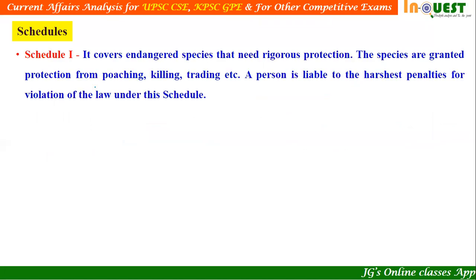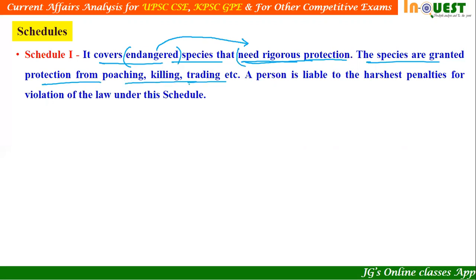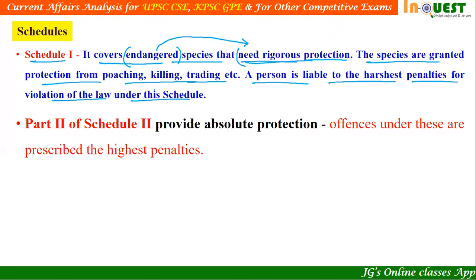Schedule number one covers endangered species that need rigorous protection — species that are nearing extinction with very minimal numbers. The species are granted protection from poaching, killing and trading. Nobody can poach, kill or trade species put under this schedule. If a person is found doing so, they are liable to the harshest penalties for violation of the law under this particular schedule.